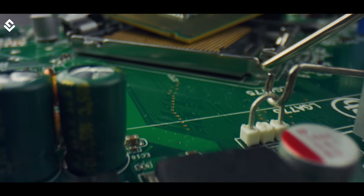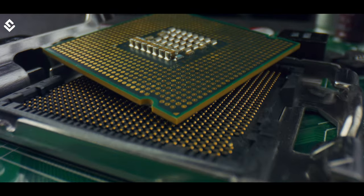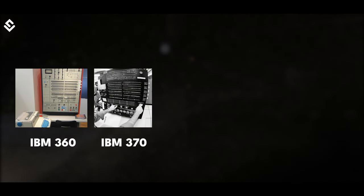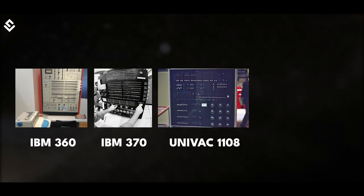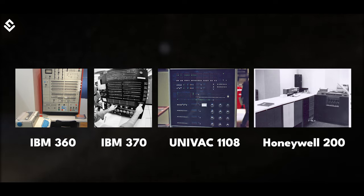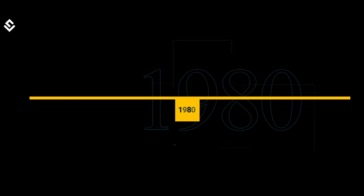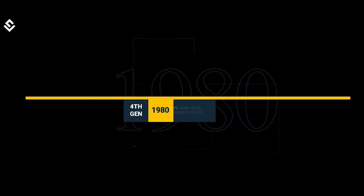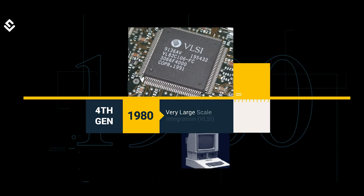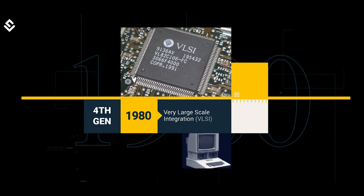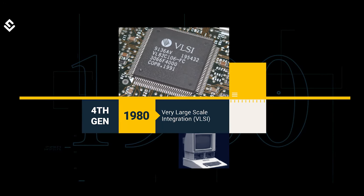The sizes of computers were drastically reduced. IBM 360, 370, UNIVAC 1108, and the Honeywell 200 series were important members of this generation.